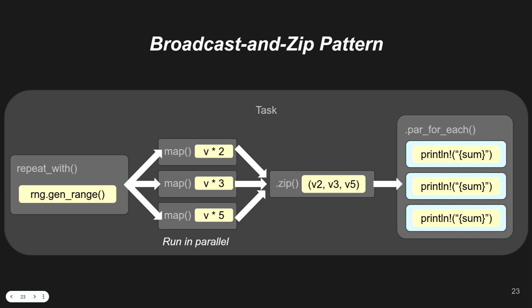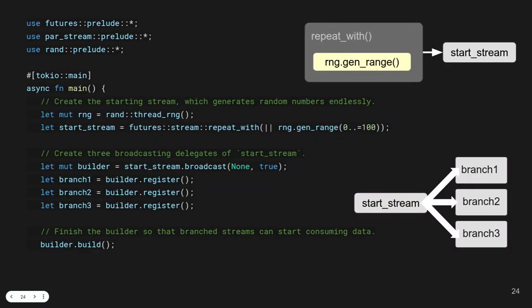Another pattern the framework supports: broadcasting. The idea is — what if one incoming order needs to be dispatched to different people for different tasks? Like a combo meal with a drink, fries, and a burger. You don't give everything to one person — you send fries to the fry station, drink to the drink station, burger to the burger station. This is the broadcast pattern. In code, after building the random number stream, I save the work-in-progress to a variable, then call `broadcast` on it.